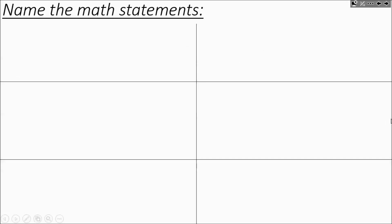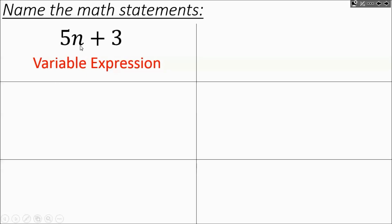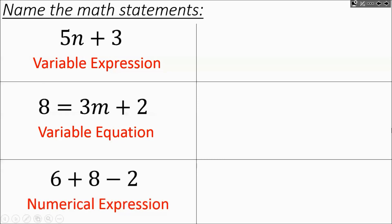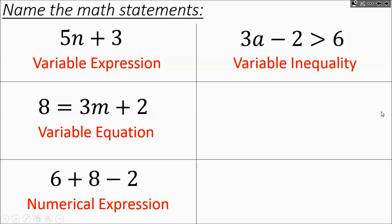Let's quickly review. 5n plus 3 would be considered a variable expression, since a variable is a letter representing an unknown number. The next one would be a variable equation — it has an equal sign and variables. If there are no variables, it's a numerical expression: no equal sign, no inequality sign. A variable inequality has a variable and an inequality sign.